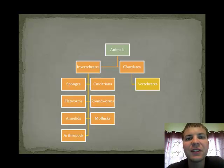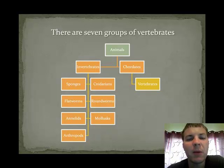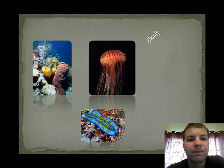There are seven groups of invertebrates, which you can see here. Some of them will be familiar to you, and some may be unfamiliar to you. Let's take a closer look at them.